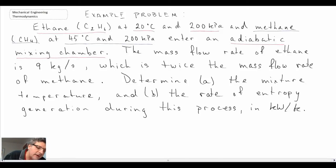We're given the flow rates, the mass flow rate of both of them, and we're told to find the mixture temperature - that would be the fluid stream leaving - as well as the rate of entropy generation during this process in kilowatts per Kelvin. What we'll begin by doing is writing out the information that we know and then we'll proceed through the solution.